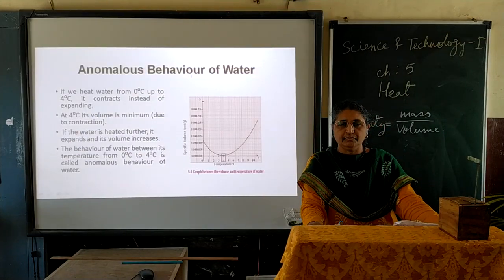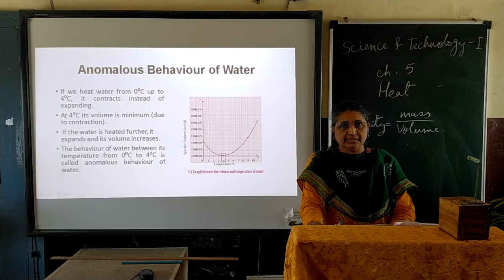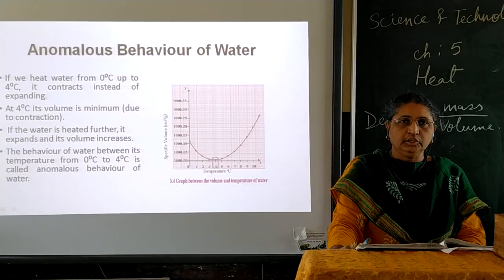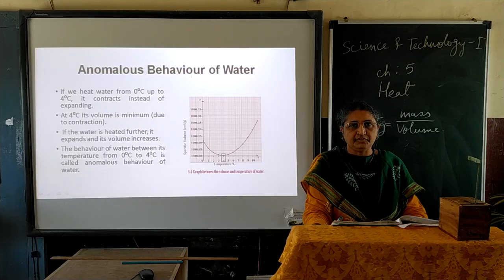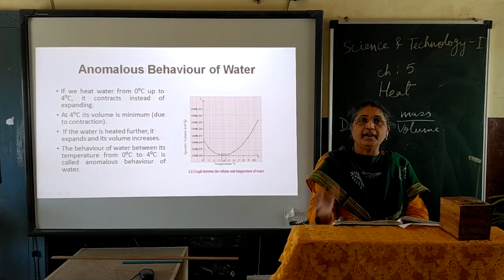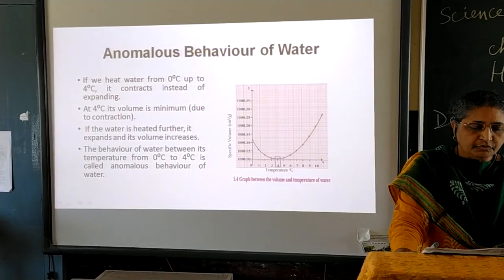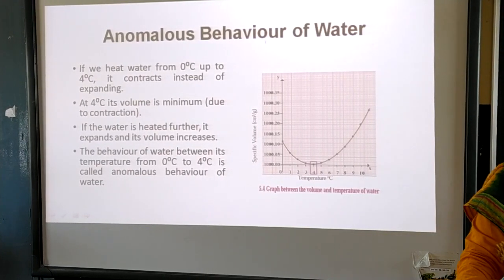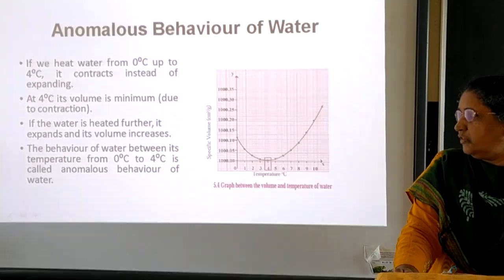Now we will start with anomalous behavior of water. In general, whenever we supply heat to any substance, it expands, and when cooled, it contracts. Water, however, shows a special and exceptional behavior. When we heat water from zero degrees Celsius to four degrees Celsius, instead of expanding, it contracts. At four degrees Celsius, its volume is minimum. If the water is heated further, it expands and its volume increases. This behavior of water between zero degrees Celsius and four degrees Celsius is called anomalous behavior of water.